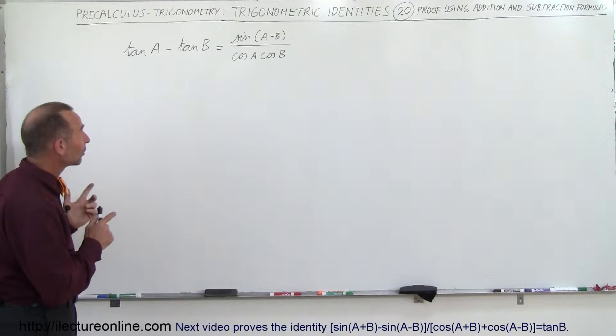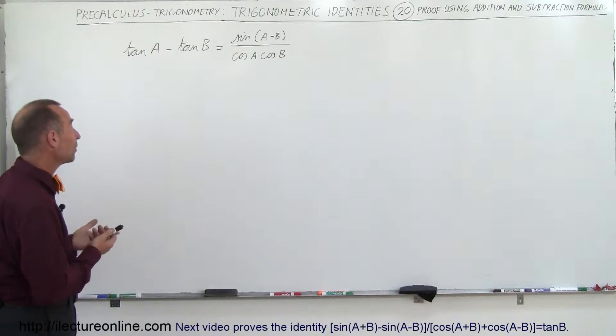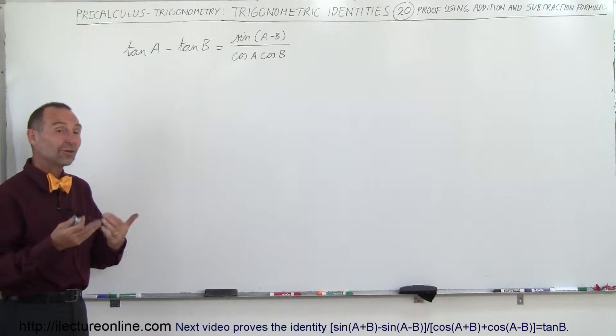Starting with the left side, we're going to try and make that look like the right side. So I think what we should do here is turn the tangent into sine divided by cosine.